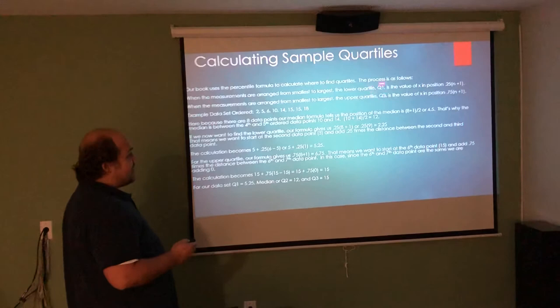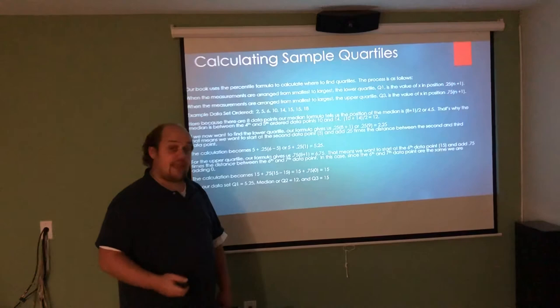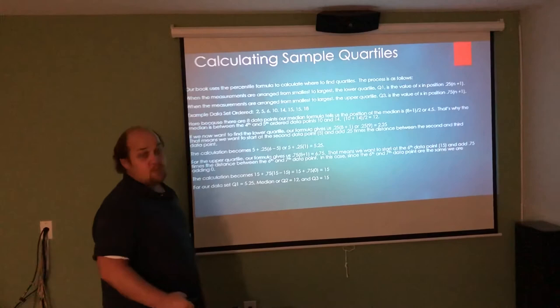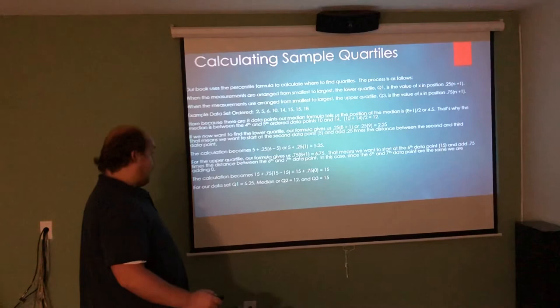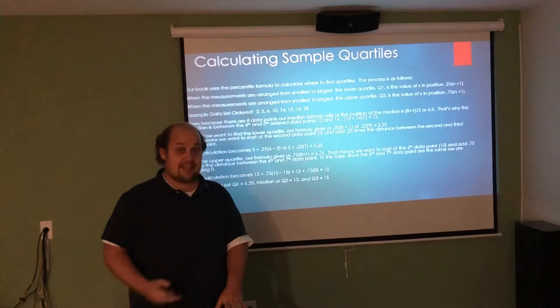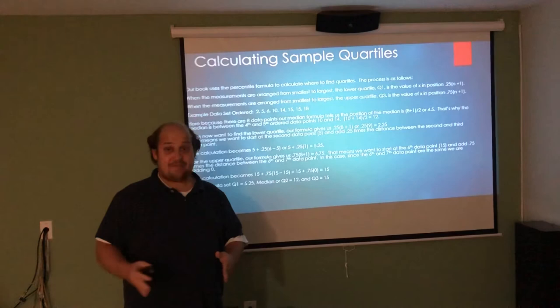When we have everything arranged smallest to largest to find Q1, all we're going to do is find which X is in position 0.25 times N plus 1. The problem is if we get a decimal answer for that, we have to see it as going that distance towards the next data point. And that's really where students get tripped up. If you get a whole number value that it returns, we just look in that location, it's not so bad. Same idea for Q3. Q3 is the value in position 0.75 times N plus 1.